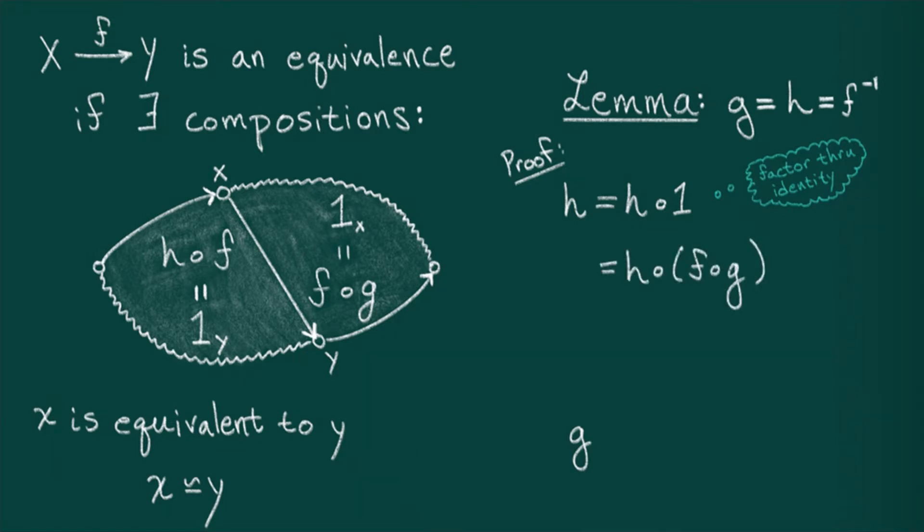Next, the associativity condition allows me to move the parentheses to engulf h and f. By assumption, this composition is just the identity. Finally, by definition, the identity composed with g is just g. Therefore, h equals g, and I can victoriously declare qed.